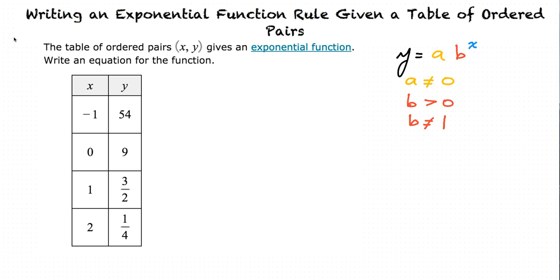The number a in this equation is the y-intercept. Because when we plug in 0 for x, that will cause b to be 1, which, when multiplied with a, is just a. Thus, a is the y-intercept.